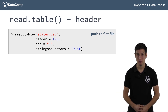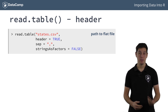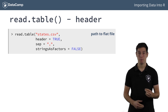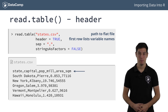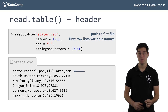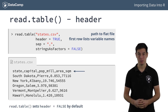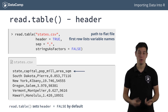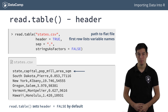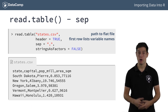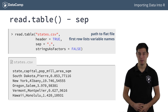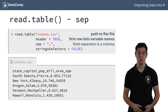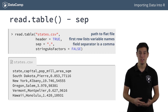Now for the header argument. If you set this to TRUE, you tell R that the first row of the text file contains the variable names, which is the case here. read.table sets this argument to FALSE by default, which would mean that the first row is already an observation. Next, sep is the argument that specifies how fields in a record are separated. For our CSV file, the field separator is a comma, so we use a comma inside quotes.